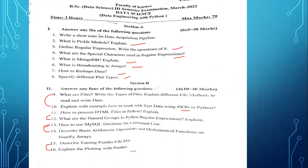If you see the paper: one question from numpy, one from MySQL — if you prepare MySQL it will be very easy. Next: describe reading pandas files and explain plotting with pandas. Each unit has two questions, and if you prepare at least half a unit you will get a good score. One question we missed in the important questions is the pipelining concept — add the pipeline topic to the first unit.